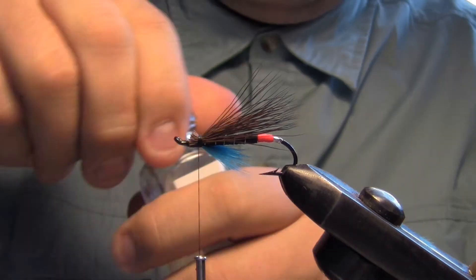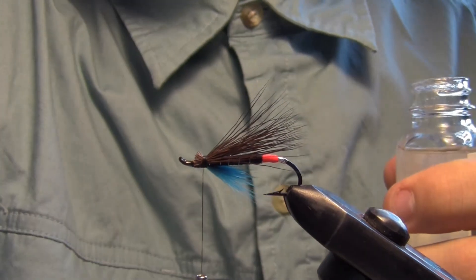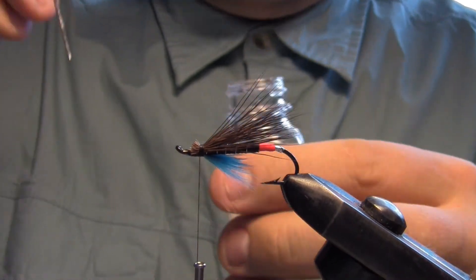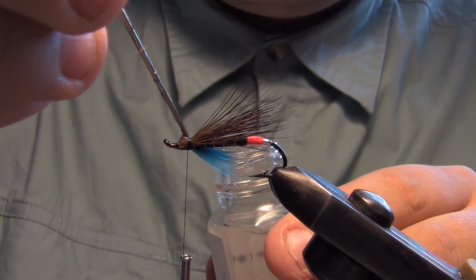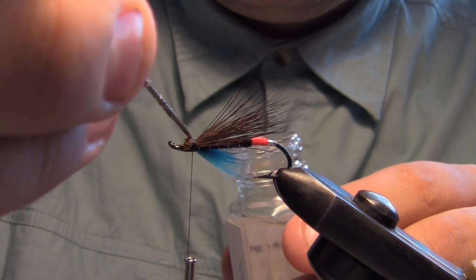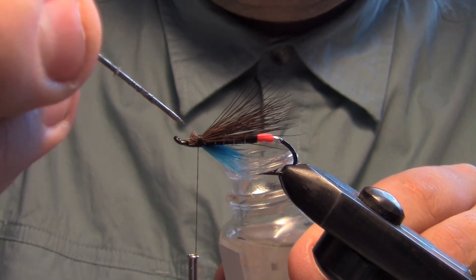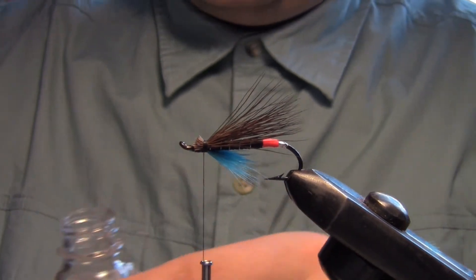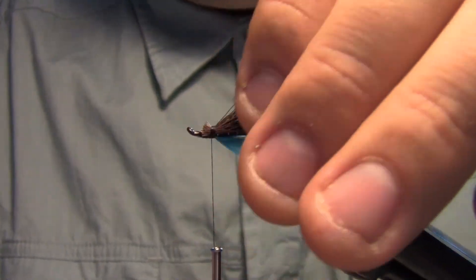What I like to do with these hair wing flies, I like to put a little dab of cement up through the top. I'm going to wrap my head off there, just to help lock it in place later on.